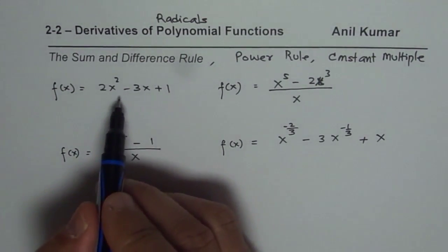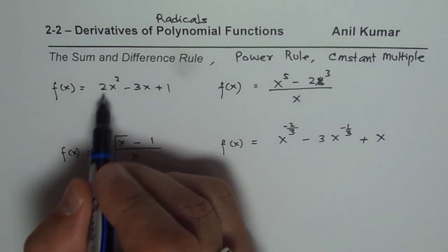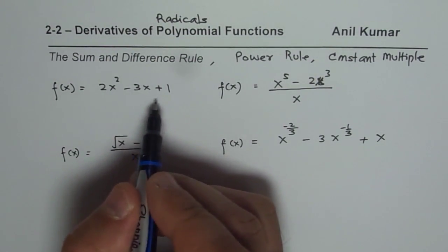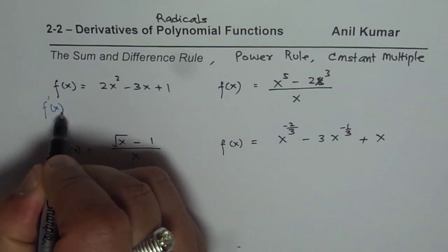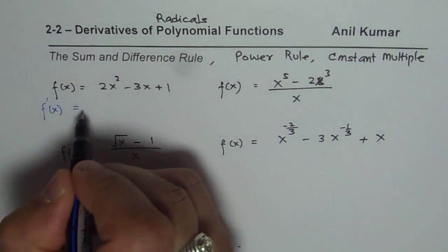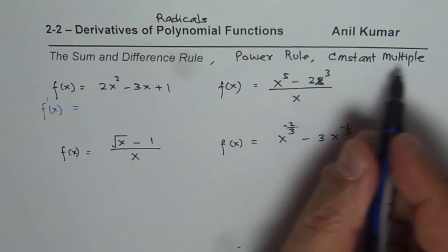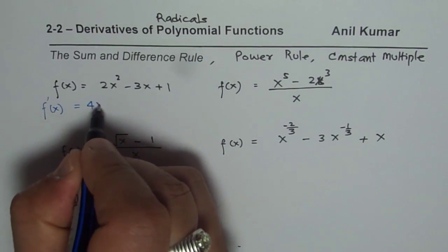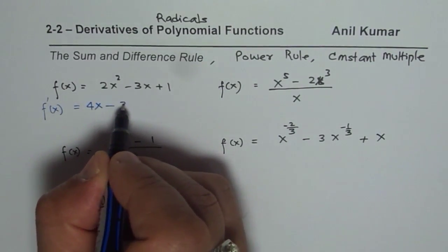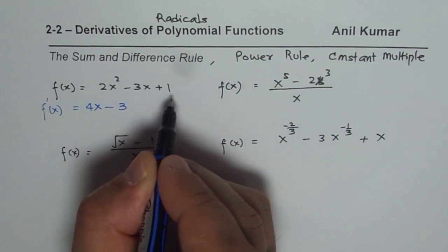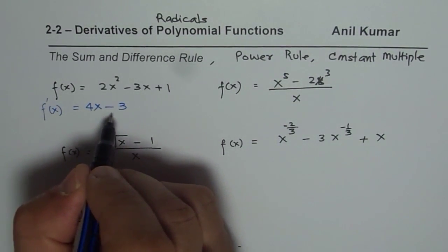We apply the sum and difference rule, finding the derivative of each term. For f(x) = 2x² - 3x + 1, f'(x) equals 2 times 2x, which is 4x. Applying the power and constant multiple rule gives us 4x minus 3. The derivative of the constant 1 is 0, so f'(x) = 4x - 3.